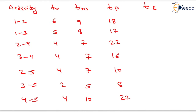Activity T0, Tm, and Tp are already given in the question. We have to determine the value of activity time, that is Te. It will be equal to (T0 + 4Tm + Tp) divided by 6 — that is the formula for Te.